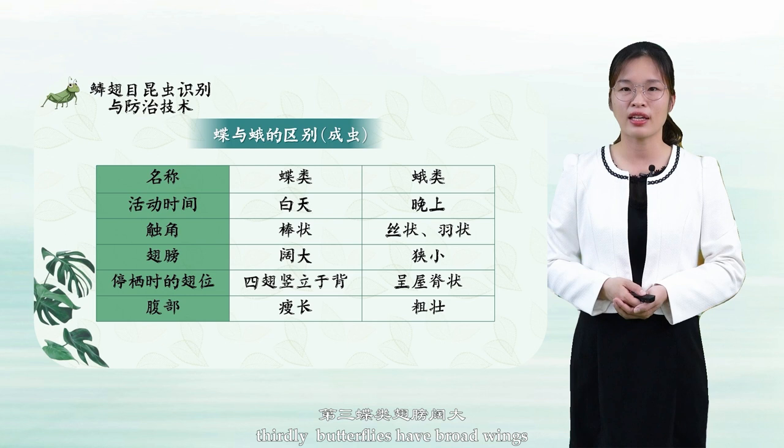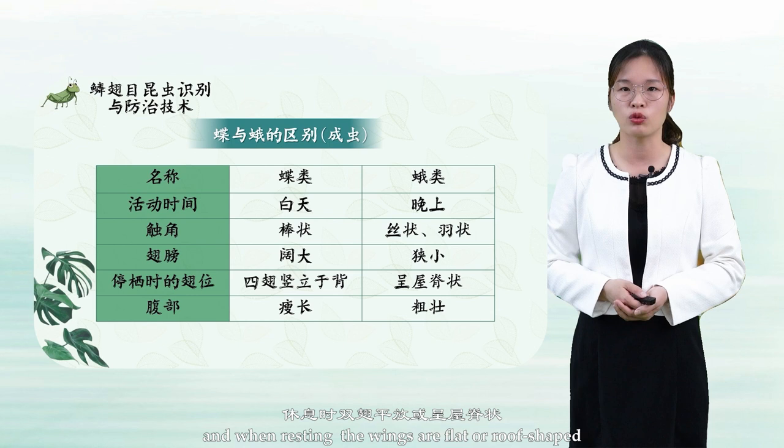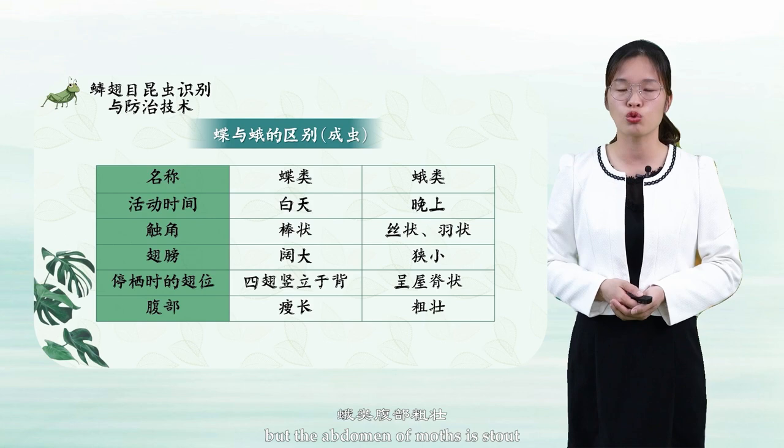Thirdly, butterflies have broad wings. When resting, the wings are set up on the back of the body. The wings of moths are narrow, and when resting, the wings are flat or roof-shaped. Fourthly, the abdomen of butterflies is long and thin, but the abdomen of moths is stout.